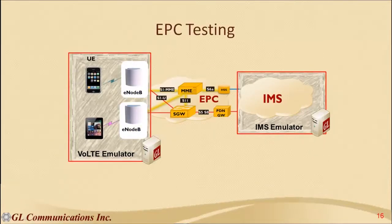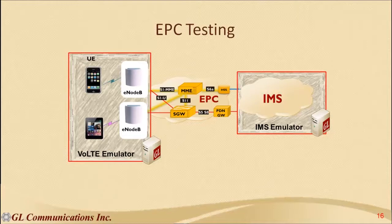The next test configuration is to test the EPC in isolation. The EPC does not handle IMS signaling, but we must ensure it is not the source of issues during deployment. We must test EPC's ability to carry voice RTP packets without degradation — including testing dedicated bearer establishment for voice services and EPC's ability to forward voice RTP packets under heavy background data load conditions. EPC must also be tested for its ability to handle IMS SIP signaling packets under heavy load conditions.